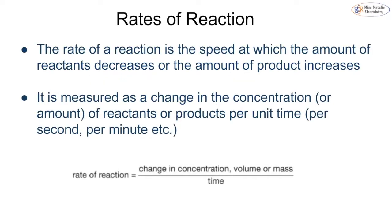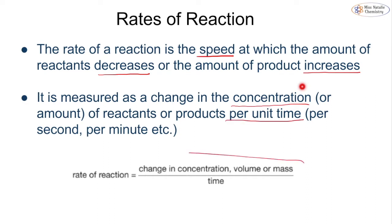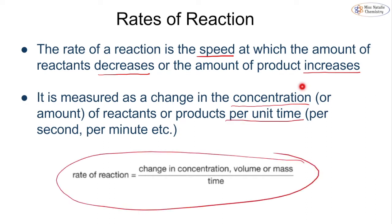So what is a rate of reaction? It is the speed at which an amount of reactants either decreases or the amount of products increases. We measure it as a change in concentration per unit time, and we calculate it using this equation: change in concentration, volume or mass divided by time.